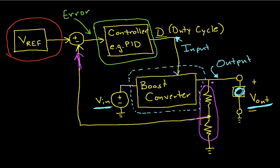On the other hand, if the error is negative, which means that the output voltage is higher than it should be, the controller adjusts the duty cycle to reduce the voltage.